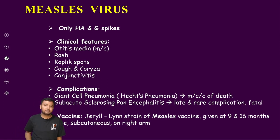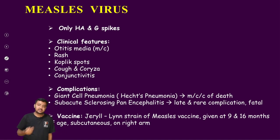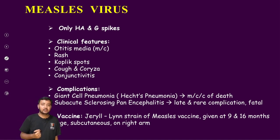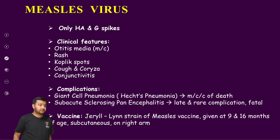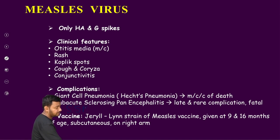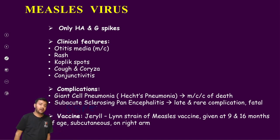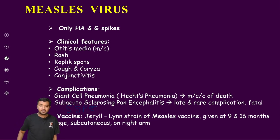Complications seen are rare, but pneumonia is the most common cause of death — giant cell pneumonia — that is the cause of death. Then we have SSPE, subacute sclerosing panencephalitis; it is a very dangerous complication, but it is very rare.